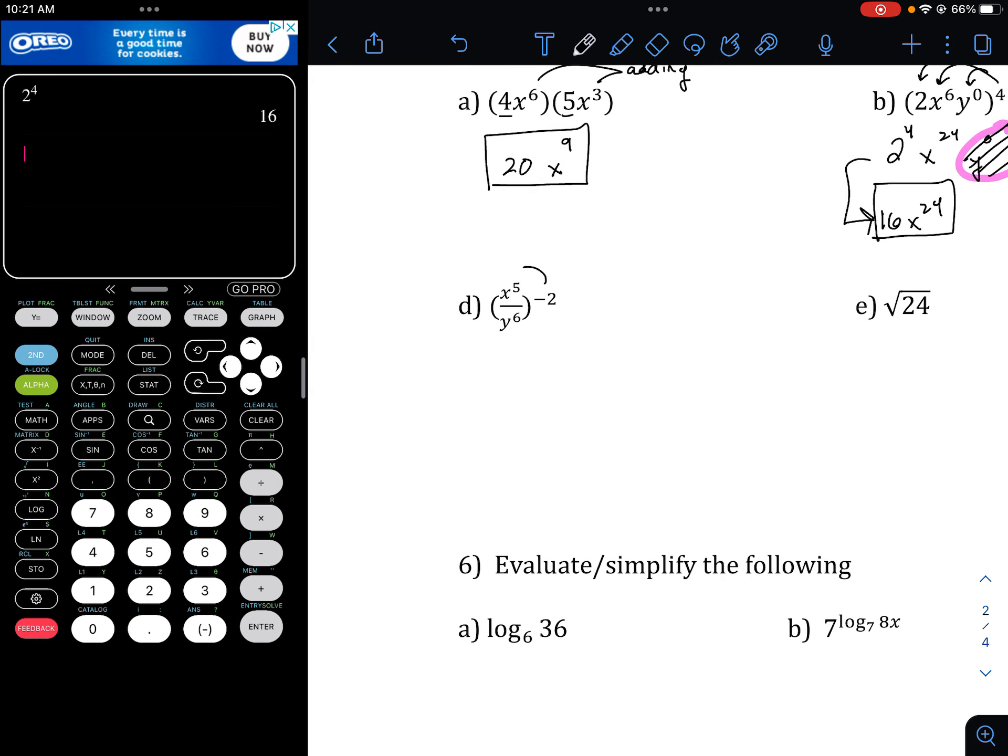Negative exponents, we distribute those. So, x to the negative 10 over y to the negative 12th. And another thing, remember, negatives switch. So, that would become y to the 12th over x to the 10th. Negatives switch the powers. Something else possibly to write down. Negatives, negative powers switch where they're at.